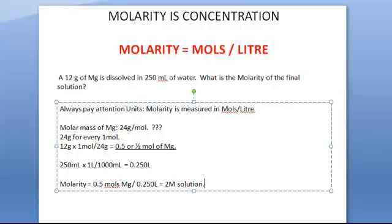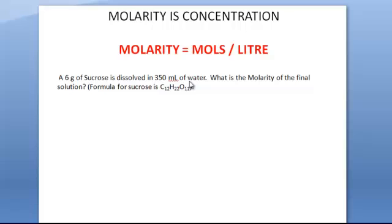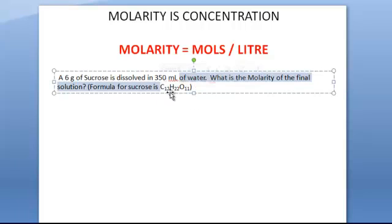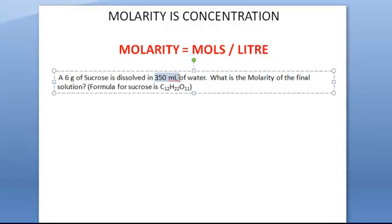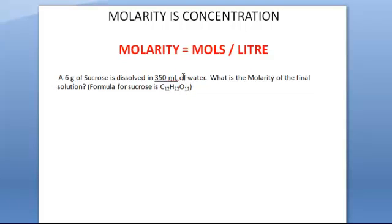The third problem is slightly trickier. We have 6 grams of sucrose dissolved in 350 milliliters of water. What is the molarity of the final solution? Sucrose is a very big compound. From the molecular formula, you have 12 atoms of carbon, 22 of hydrogen, and 11 of oxygen — C12H22O11. You have to find the composite molar mass of sucrose. Don't forget to pay attention to units — you don't want to divide by 350 milliliters; your number will be way off.